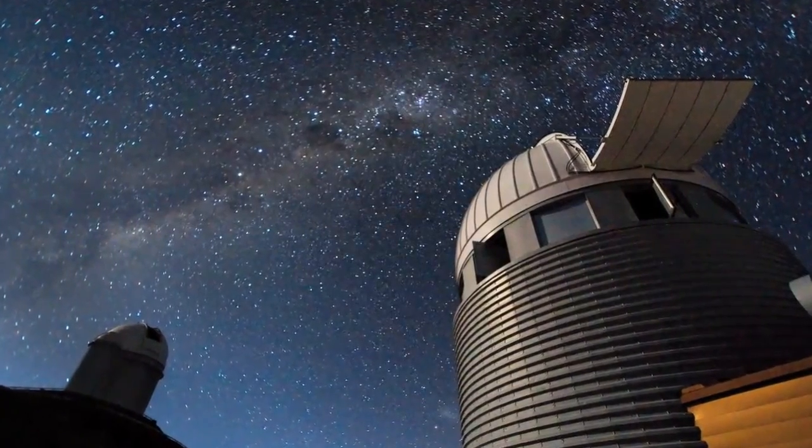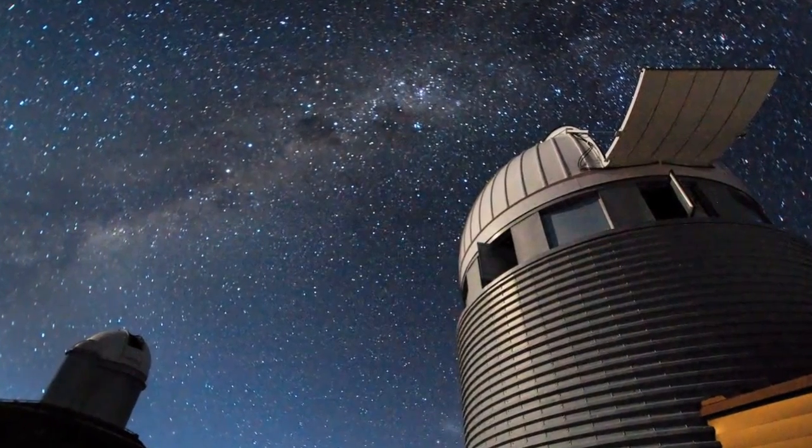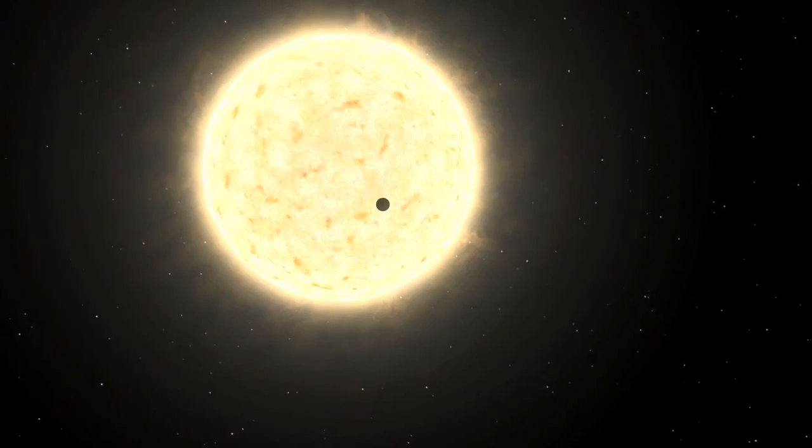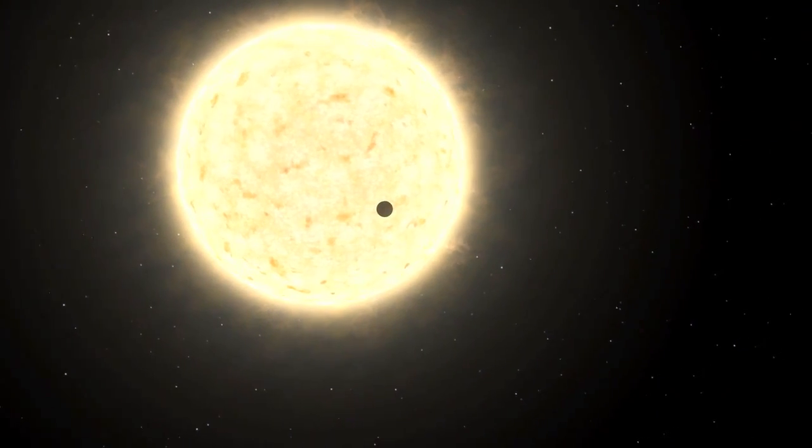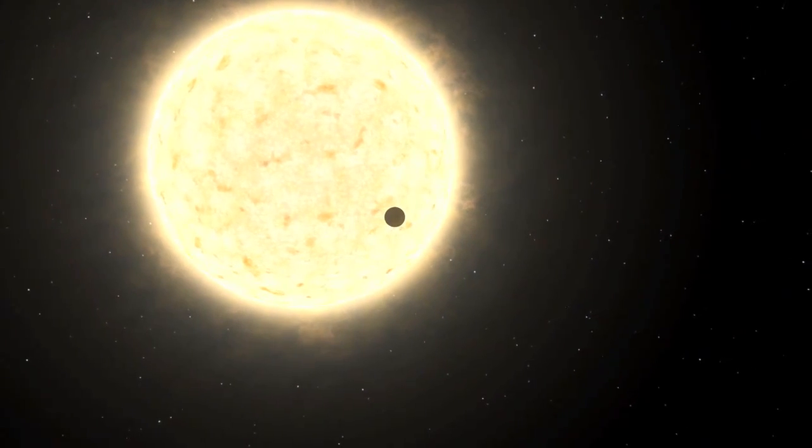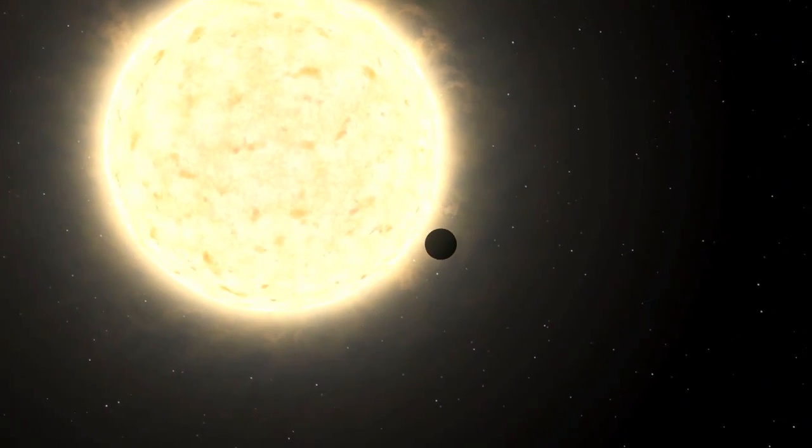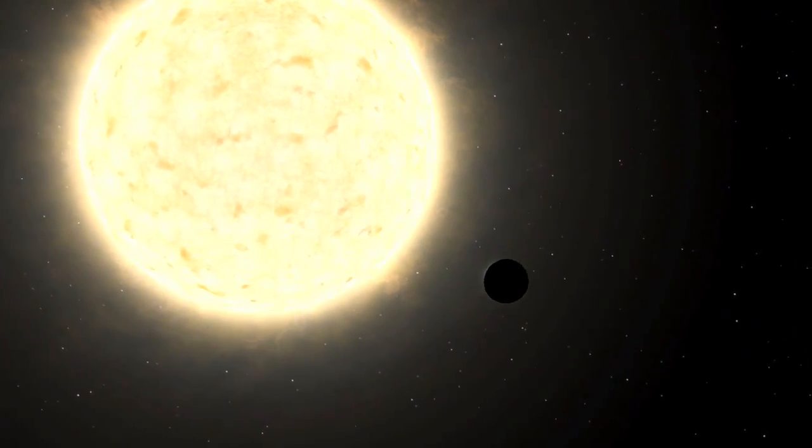Although the Jupiter-like exoplanet has escaped the fate of these inner planets so far, the star will expand again in the next stage of its evolution. When this happens, the star may engulf the planet, meaning it may be doomed after all.